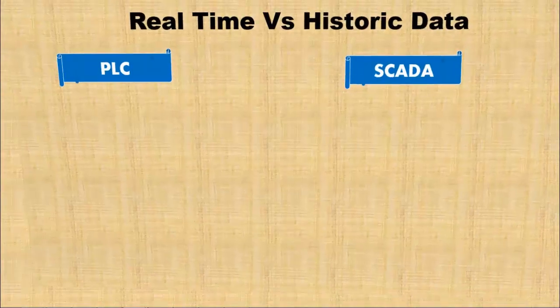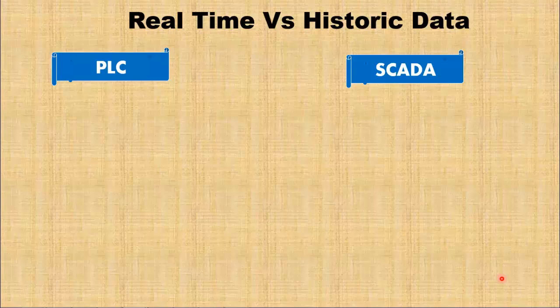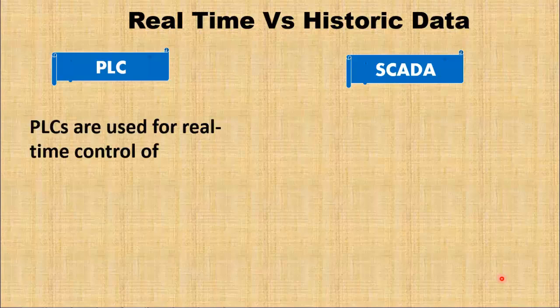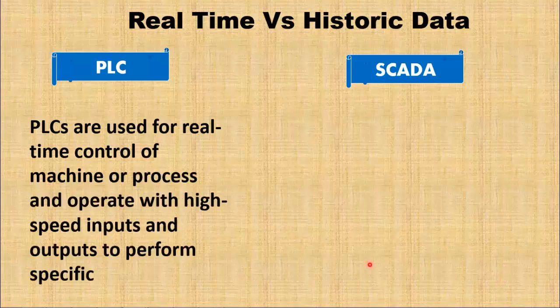The last difference is real-time versus historical data. PLCs are designed for real-time control and monitoring and operate with high-speed inputs and outputs to ensure timely response to the changing conditions of the industrial process.